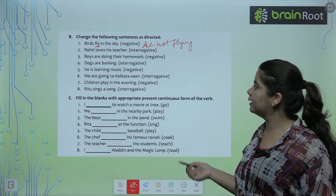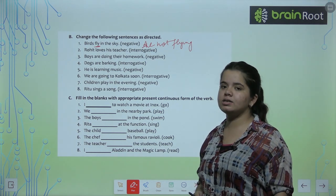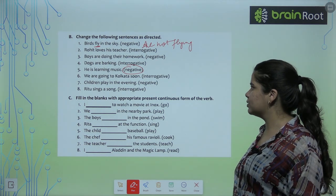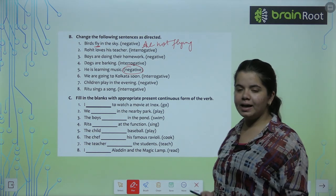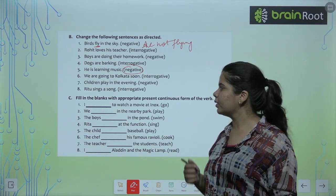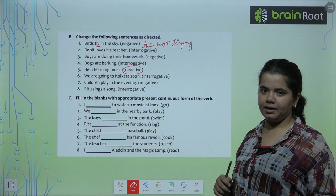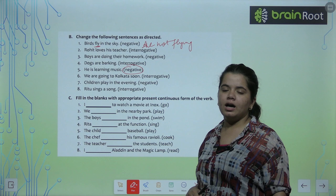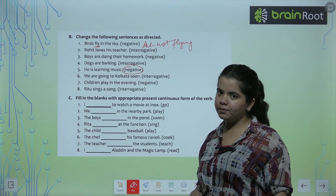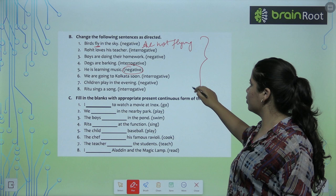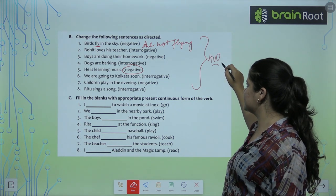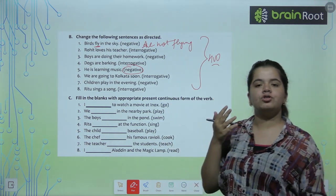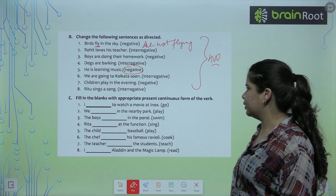You can see I changed the form of question. He is learning music. He is not learning music because I had to change in the negative. We are going to Kolkata soon. Interrogative. Are we going to Kolkata soon? Children play in the evening. Negative means children do not play in the evening. Ritu sings a song. Is Ritu singing a song? So we have done all this. I hope this exercise, this part was clear to each and every one of you. You have to rewrite them in your homework. We have discussed, I want you to write yourself.